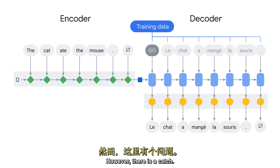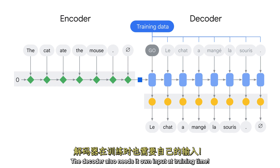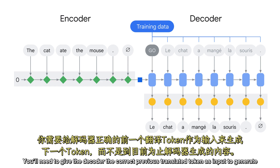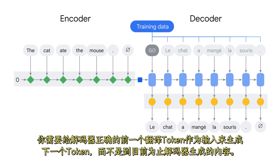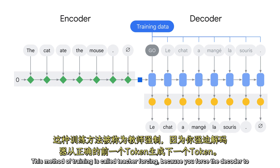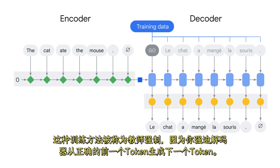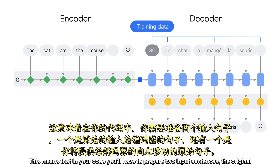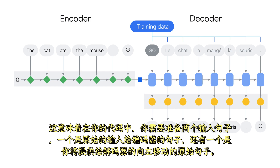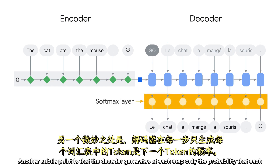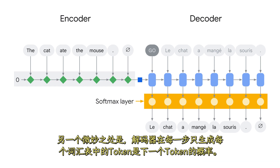However, there is a catch. The decoder also needs its own input at training time. You'll need to give the decoder the correct previous translated token as input to generate the next token rather than what the decoder has generated so far. This method of training is called teacher forcing because you force the decoder to generate the next token from the correct previous token. This means that in your code, you'll have to prepare two input sentences: the original one fed to the encoder, and also the original one shifted to the left that you'll feed to the decoder. Another subtle point is that the decoder generates at each step only the probability that each token in your vocabulary is the next one.